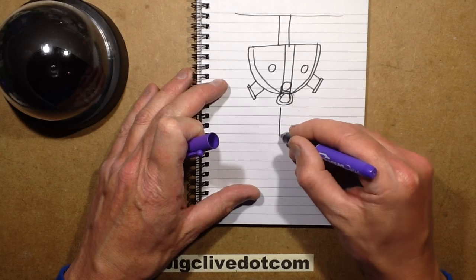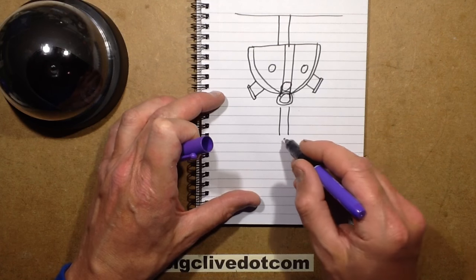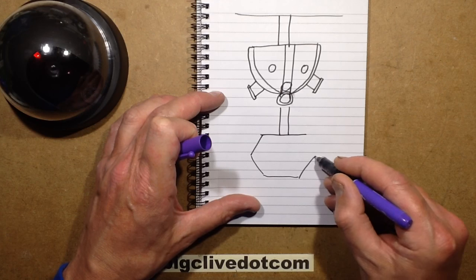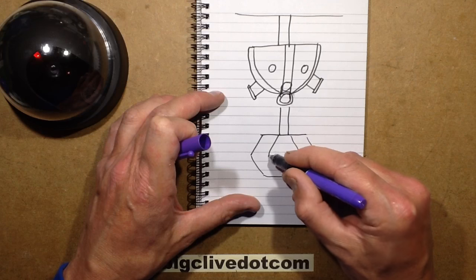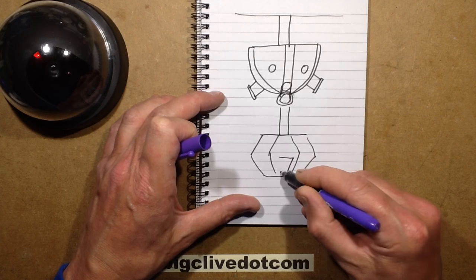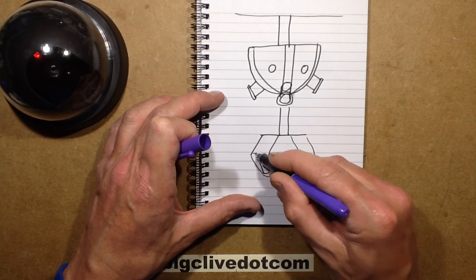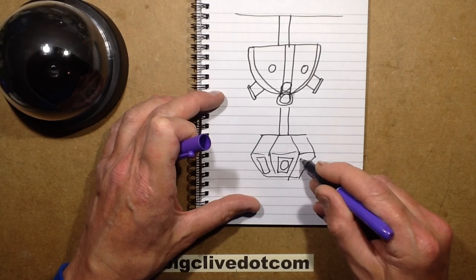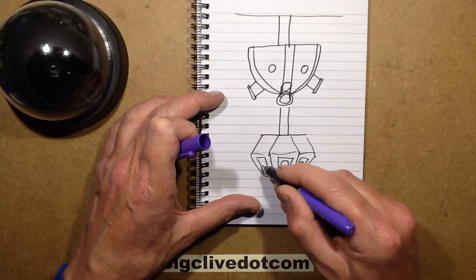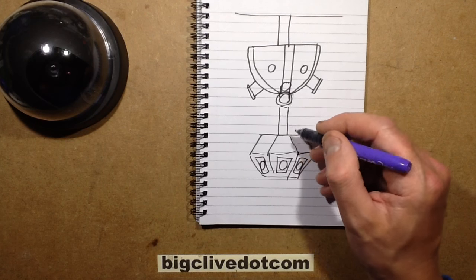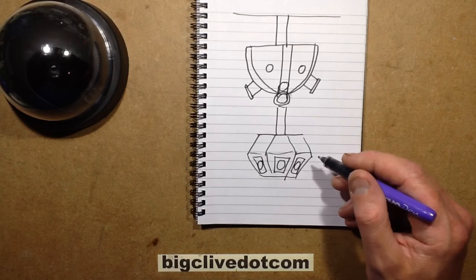Latterly, I came across another one that had a case more like this. It was sort of divided into six sections, and each section had a window like that with a lens behind it.